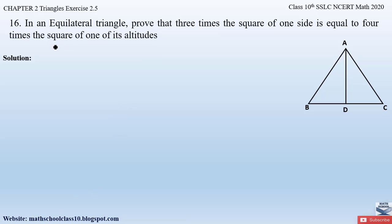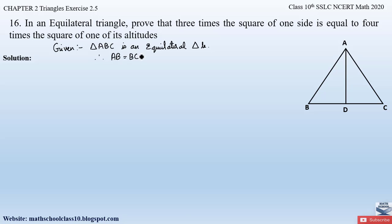First, let us write down what is given. They have given triangle ABC is an equilateral triangle. Since it is an equilateral triangle, all three sides are equal. Therefore AB = BC = AC. Also, altitude AD is perpendicular to BC.